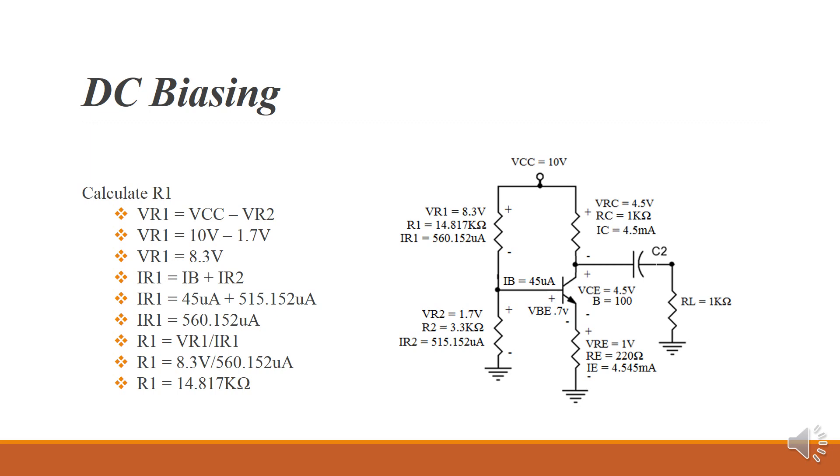Kirchhoff's current law, that gives us an IB plus an IR2 for equal to IR1.